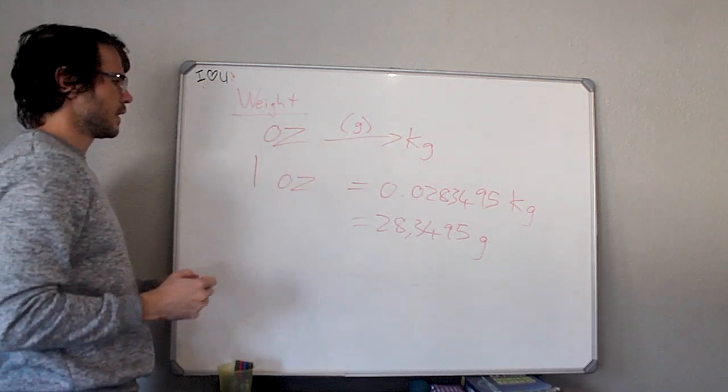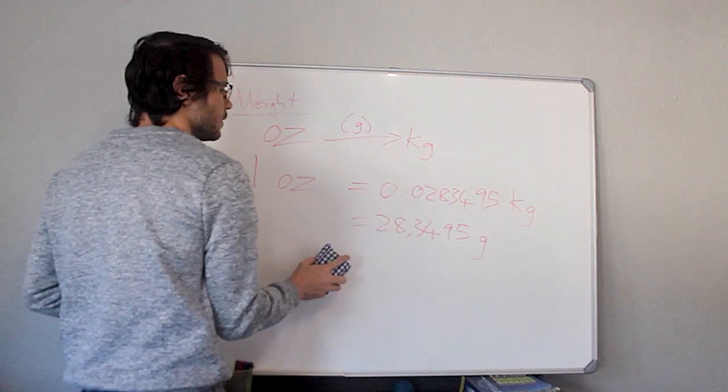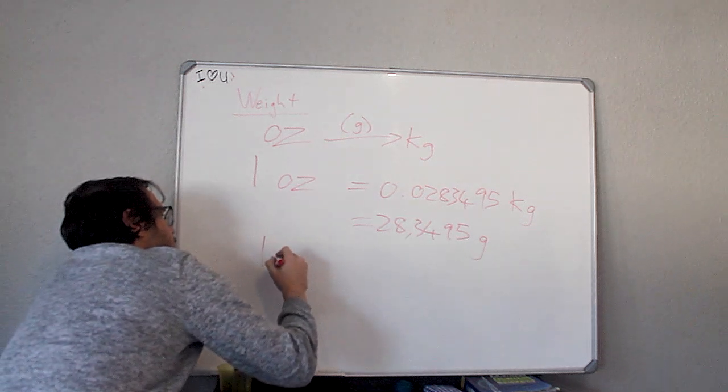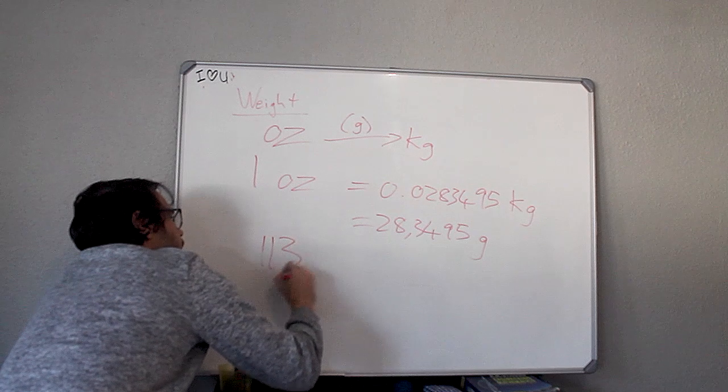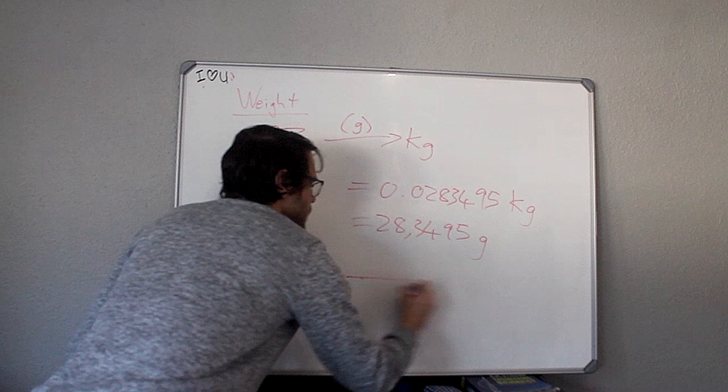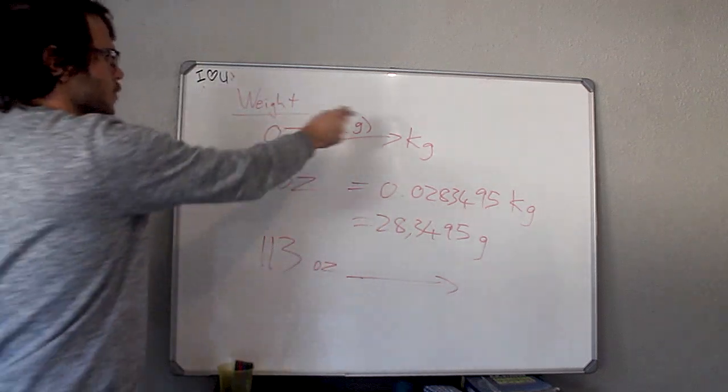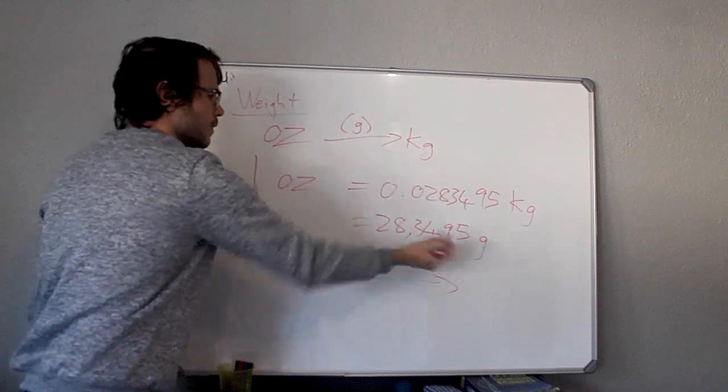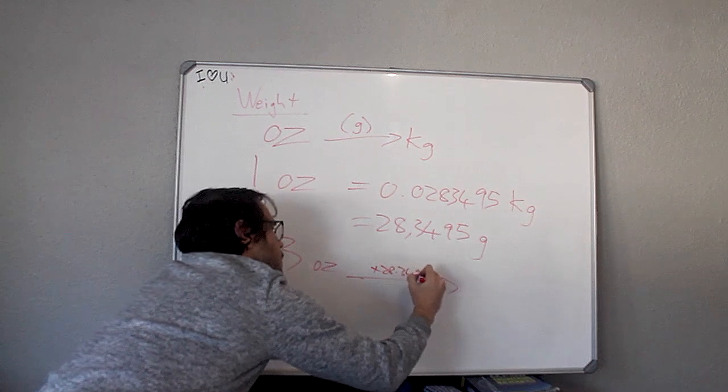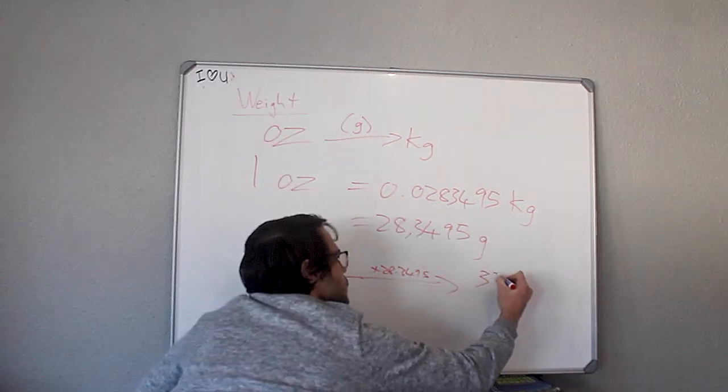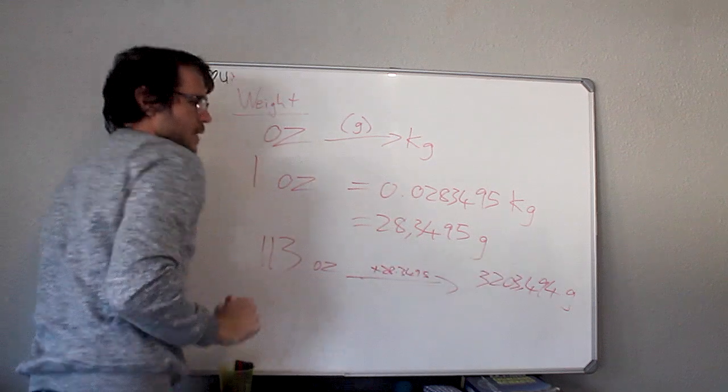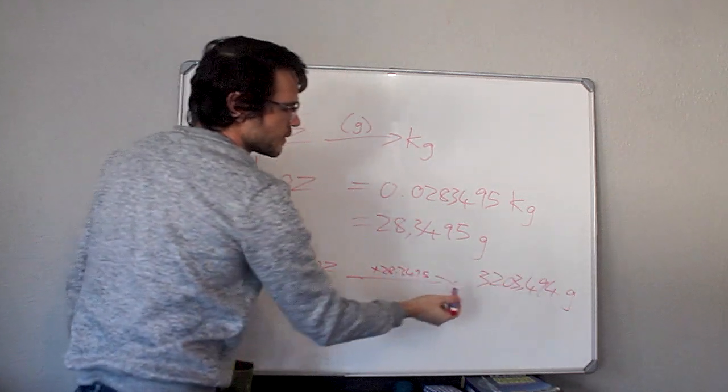This is how we convert ounces to kilograms. If I was given 113 ounces, I want to convert that to grams or kilograms. I need to multiply by 28.3495. 113 times 28.3495 is 3203.494 grams.